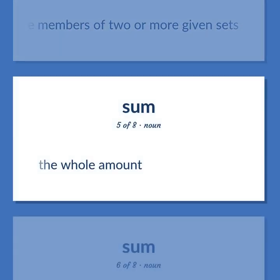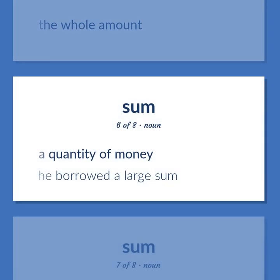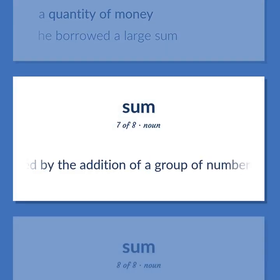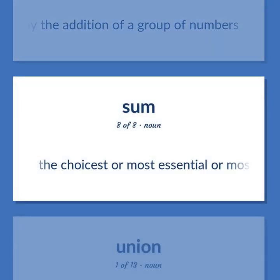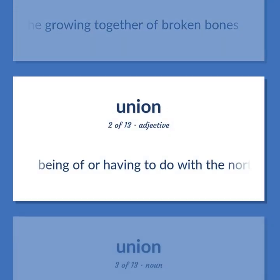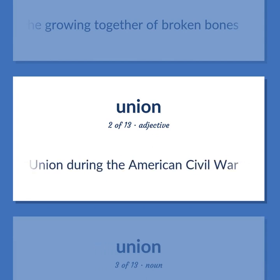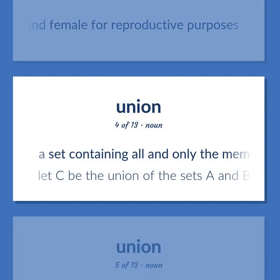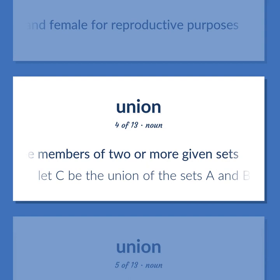Union / Sum: A set containing all and only the members of two or more given sets. The whole amount. A quantity of money — he borrowed a large sum. A quantity obtained by the addition of a group of numbers. The choicest or most essential part of some idea or experience. Healing process involving the growing together of the edges of a wound or the growing together of broken bones. Being of or having to do with the northern United States and those loyal to the Union during the American Civil War. The act of pairing a male and female for reproductive purposes. A set containing all and only the members of two or more given sets — let C be the union of the sets A and B.